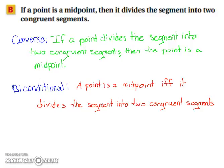They gave us: if a point is a midpoint, then it divides the segment into two congruent segments. The converse would be: if a point divides the segment into two congruent segments, then the point is a midpoint. The bi-conditional would be: a point is a midpoint if and only if it divides the segment into two congruent segments.